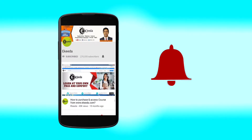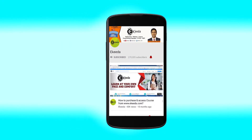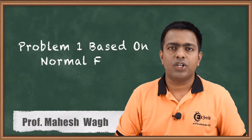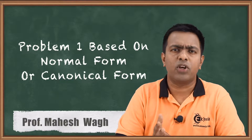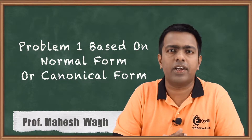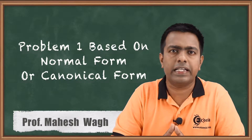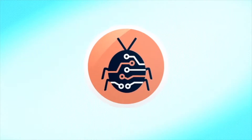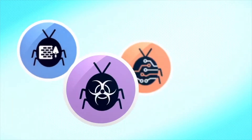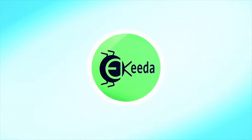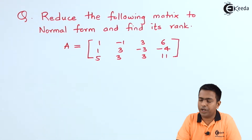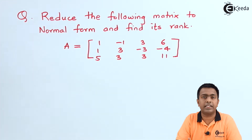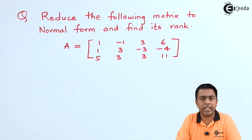Hello students, we are going to start with problem number one which is based on normal form. A matrix is given and we will convert that into normal form to find the rank of a matrix. The question is: reduce the following matrix to normal form and find its rank.